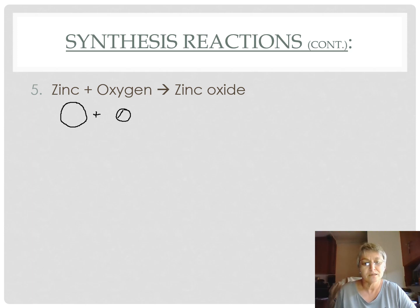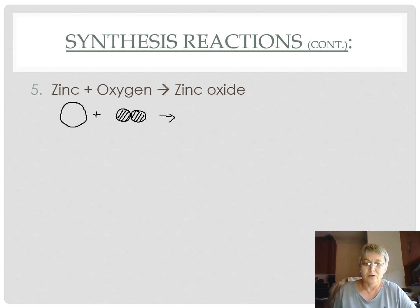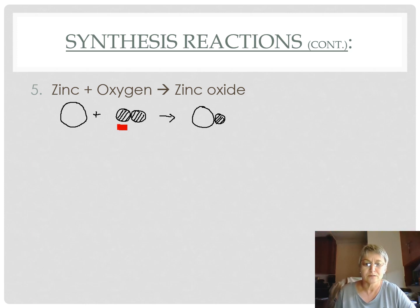We've already discussed on numerous occasions that oxygen is a diatomic element, consisting of two atoms of oxygen joined chemically. Zinc and oxygen join in the ratio one to one, so one zinc atom joins to one oxygen atom. Looking at that, the number of oxygen atoms on the left hand side of the arrow is two compared to one on the right hand side, which is not allowed.